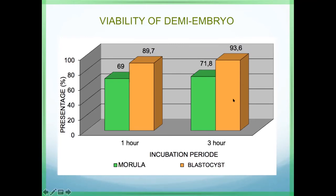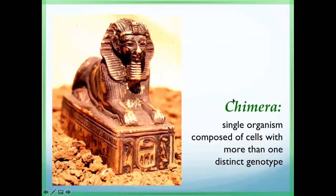Another assisted reproductive technology is the production of chimerism. A chimera is a single organism composed of cells with more than one distinct genetic origin — it actually comes from a single organism composed of two or more genetically distinct cell populations.